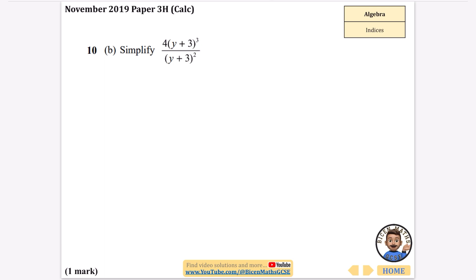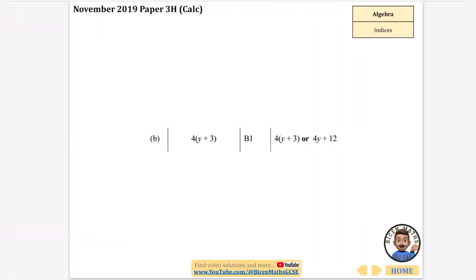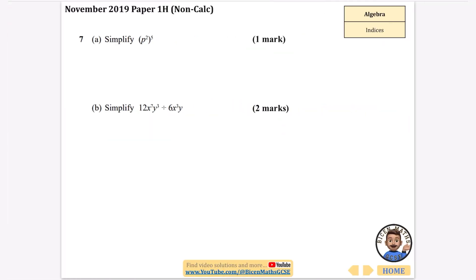A really similar one here. This time we're going to be sort of thinking about subtracting the powers, because these are the same as each other. So 3 take away 2 is 1, so it just simplifies to 4 brackets, y plus 3 to the power of 1, which is 4 brackets, y plus 3. Now we don't need to expand the brackets, we can just leave it in that form there.